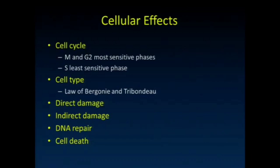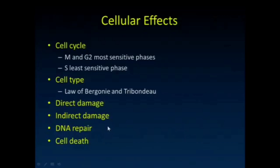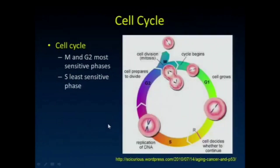Any time any of us is irradiated, we have some of this damage occurring. But we certainly don't all develop cancer. We're exposed to radiation on a daily basis just sitting here, and certainly when we step outside into the sun. Our body has mechanisms to repair that damage, and sometimes if the damage is great, the cell will just die and not propagate that damage. That's part of the reason why we don't see a bunch of cancers from radiation effects — our body is set up to repair some of it.